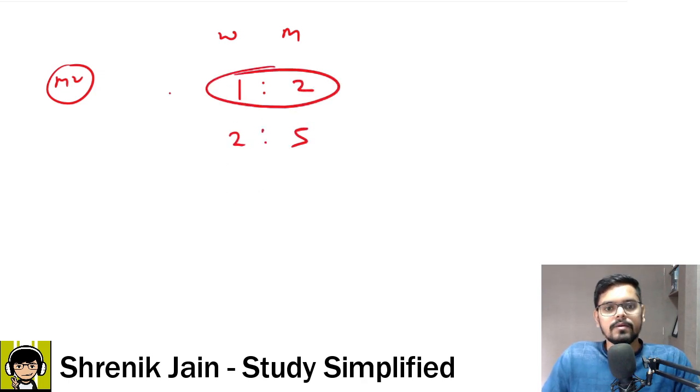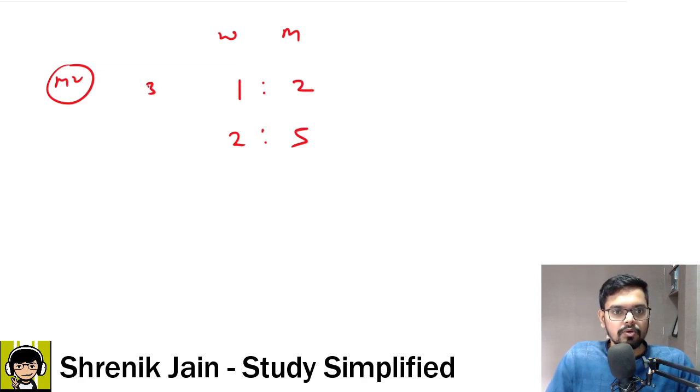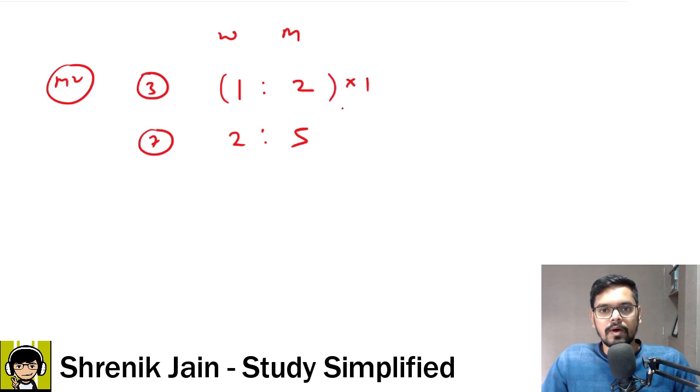If you add the values, 1 plus 2, it comes out to be 3. So the total part is 3. What about here? 2 plus 5, the total part is 7. Now the ratio they were using was first vessel 1 time, second vessel 4 times, right? And then this 7 would be multiplied here. As per the trick, this would be multiplied here.